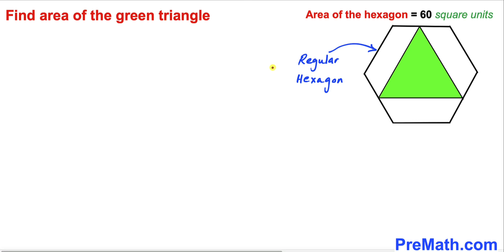Welcome to PreMath. In this video we have a green triangle inscribed in a regular hexagon, as you can see in this diagram. Moreover, the area of this hexagon is 60 square units, and now we are going to calculate the area of this green triangle.